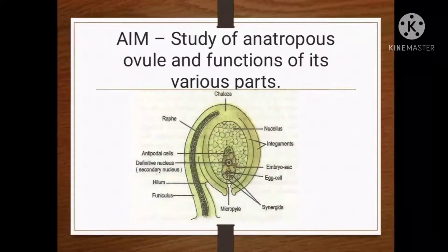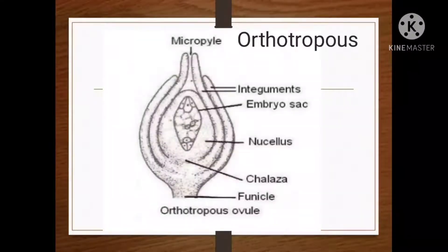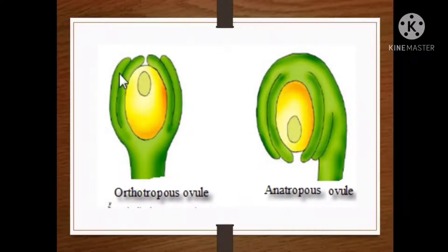Anatropous ovule is the inverted ovule in which micropyle is directed downwards and present nearer to the funicle. It is called the Anatropous ovule. There are various types of ovules — Orthotropous ovule, Amphitropous ovule, Hemitropous ovule, and Campylotropous ovule. Orthotropous ovule means the ovule in which hilum, funicle, chalaza and micropyle lie in one straight line. It is also called straight, erect, or Atropous ovule.